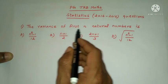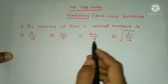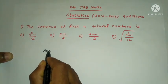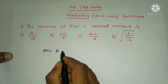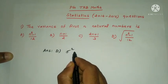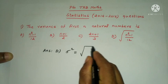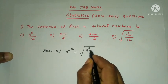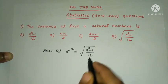The variance of first n natural numbers. The answer is option D. Sigma squared, variance sigma squared, is equal to root of n squared minus 1 by 12.